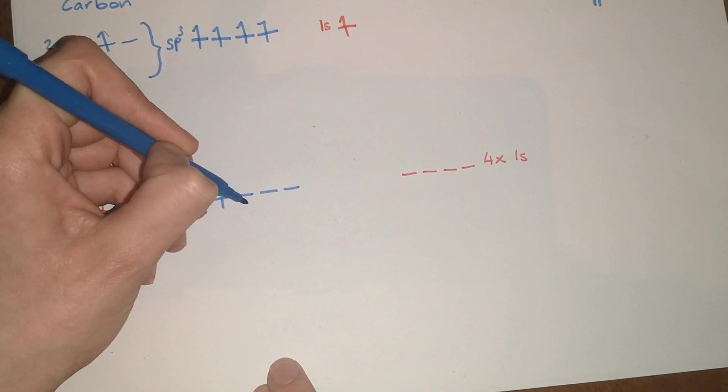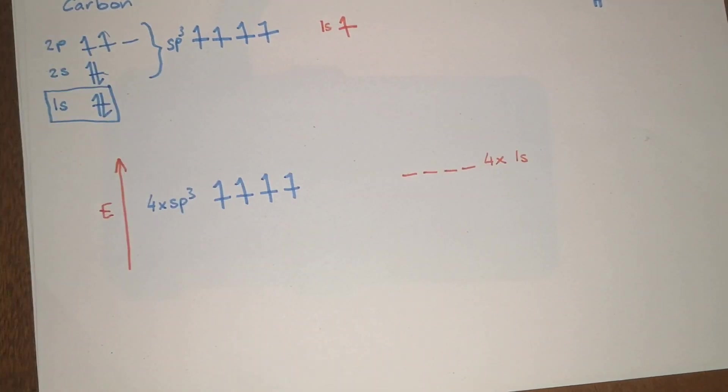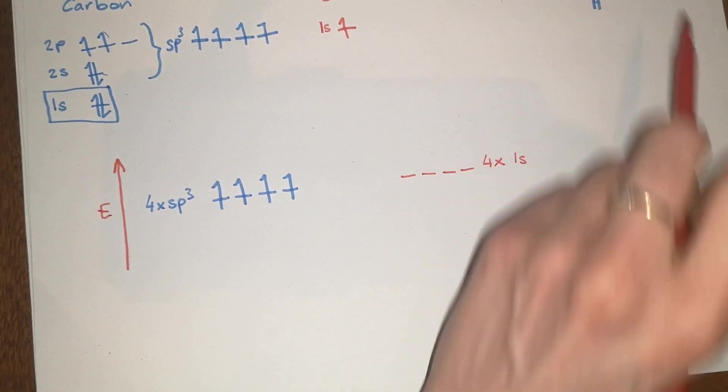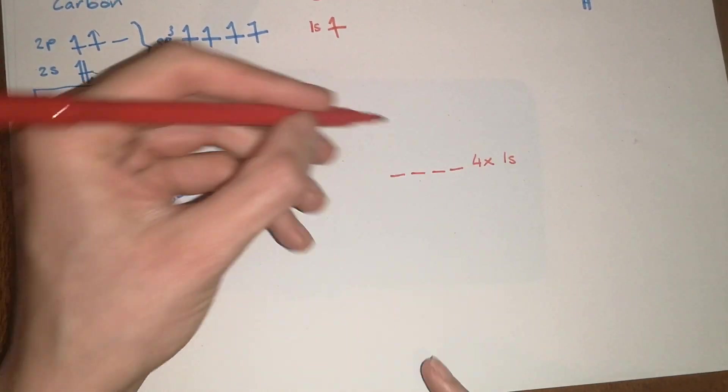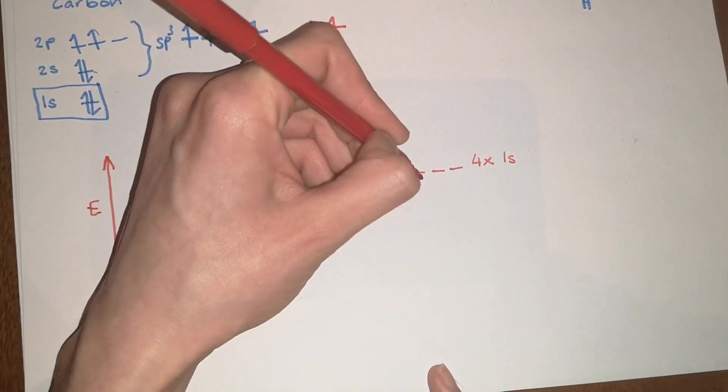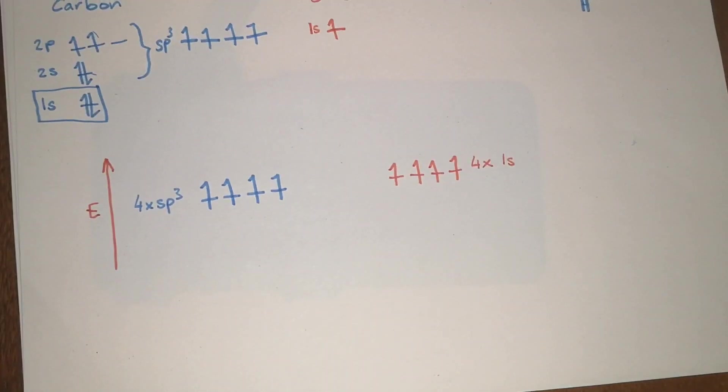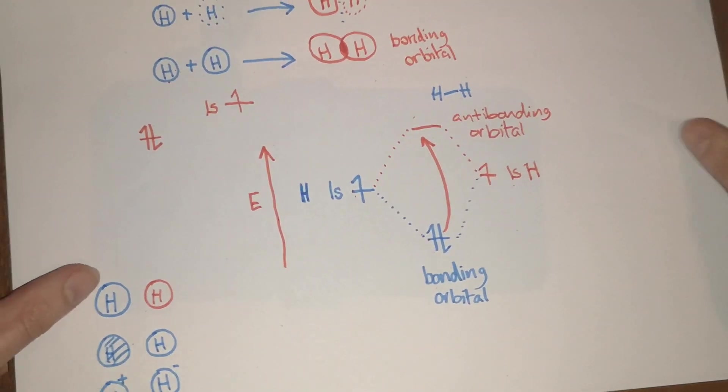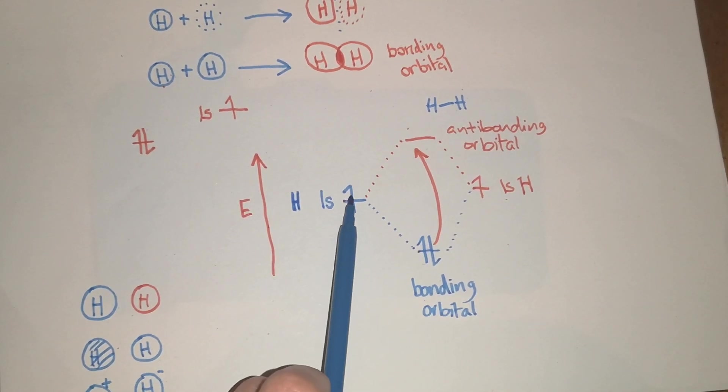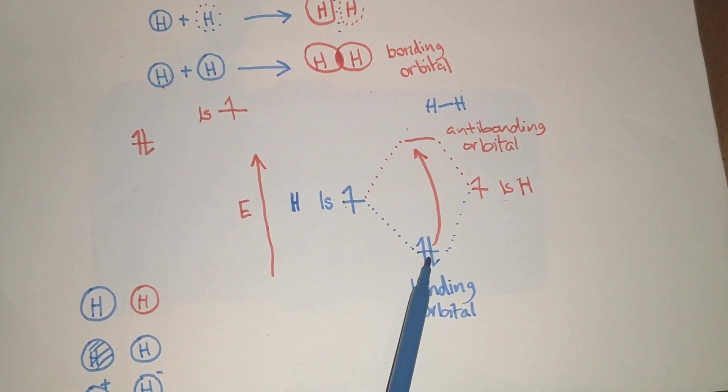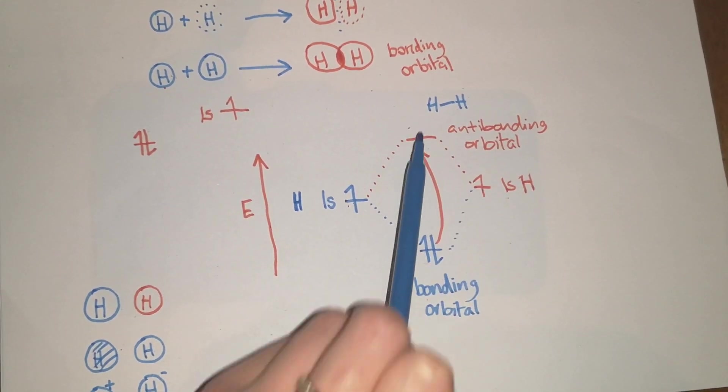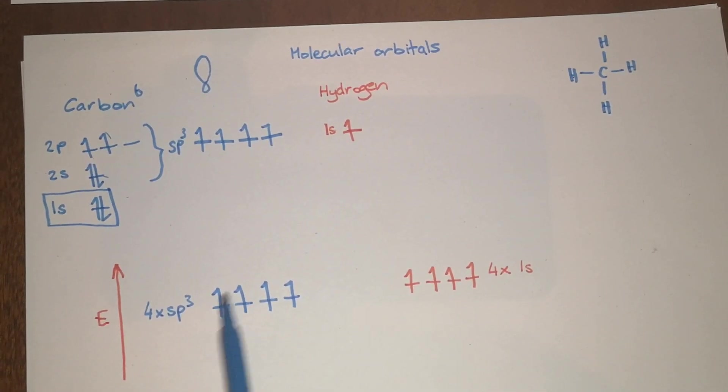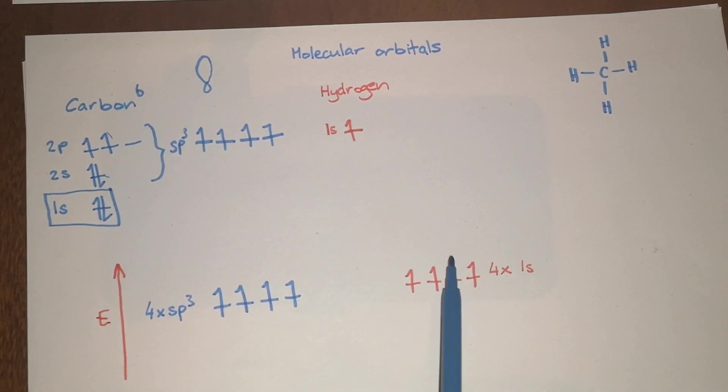What I've drawn here are the four 1s orbitals of the hydrogens. There's one orbital for each hydrogen depicted here and then there is one electron in each of those. What happens is the same as what happened before. If you started with two orbitals you're going to finish with two orbitals. In this case we're starting with four orbitals on this side and another four orbitals over here, so you have to end up with eight orbitals overall.